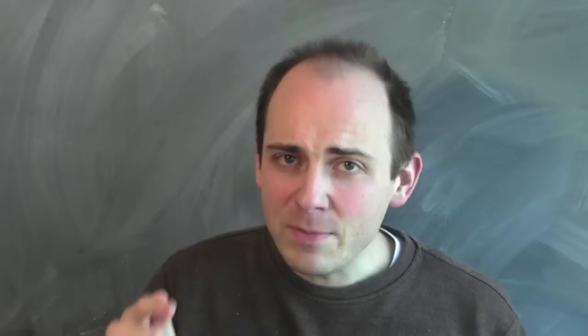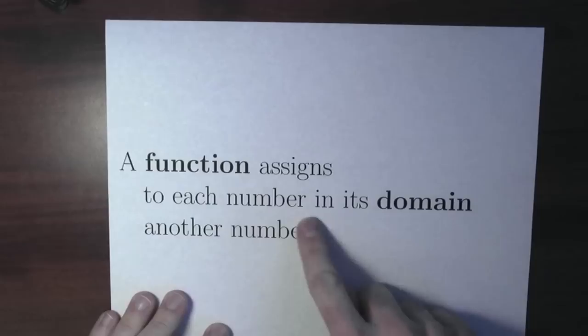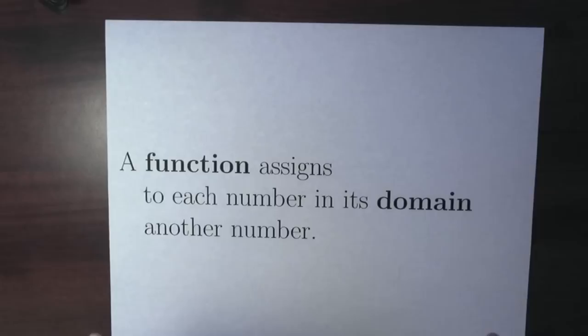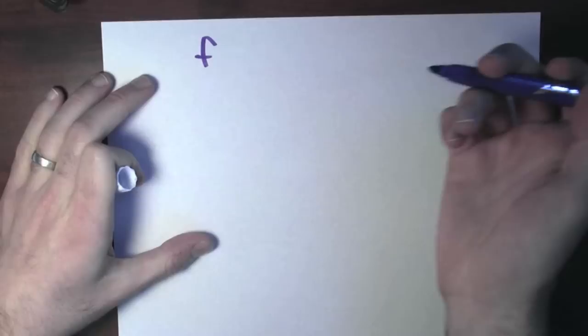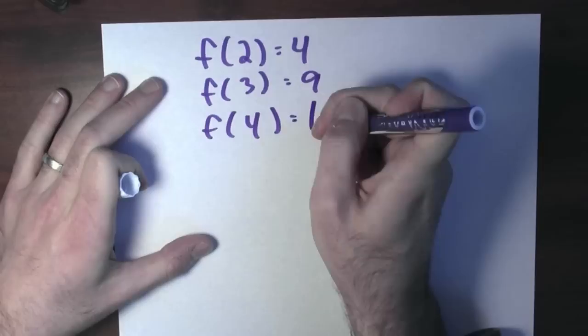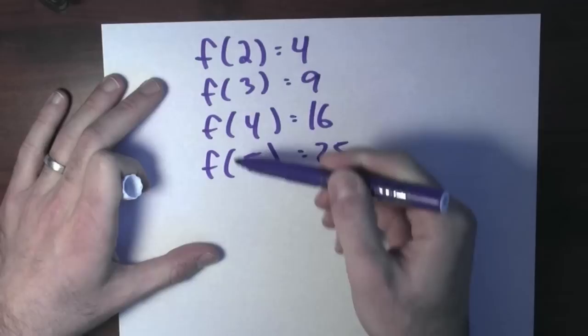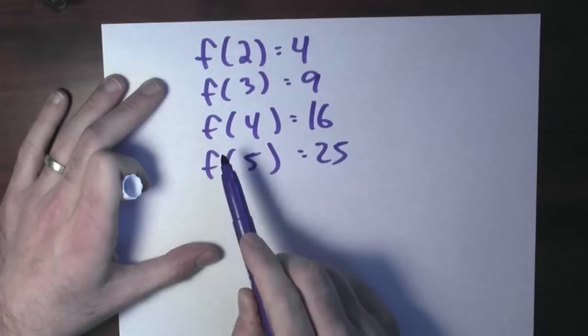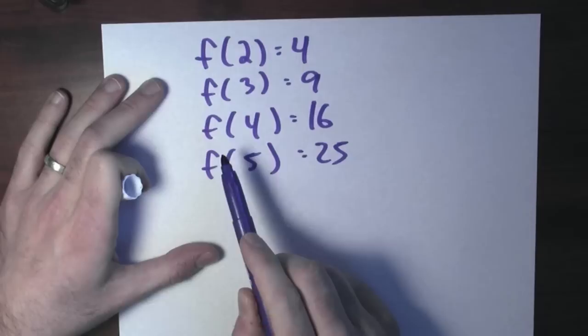A function assigns to each number in its domain another number. This definition doesn't say anything about how the function does that assignment. Let's see an example. Suppose I've got some function, I'll call it f. Maybe this function assigns to the number two the number four — so f of two is four, or f of three is nine, or f of four is 16, or f of five is 25. f assigns to the number two the number four; f of three is nine.